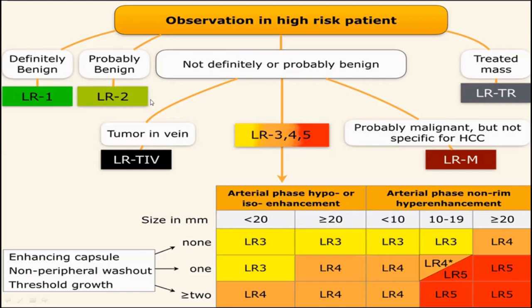For frank malignant lesions with vascular invasion, they are directly placed into the LR-TIV category. Lesions that are malignant but do not follow HCC characteristics — such as cholangiocarcinomas, hepatocholangiocarcinomas, or other malignancies occurring in the cirrhotic background — are placed under LR-M. Treated observations fall under the LR-TR category.